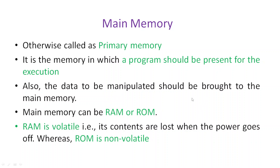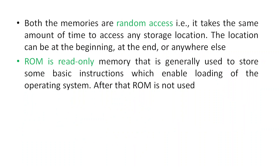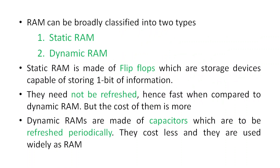RAM is volatile — if the power goes off, the RAM contents are lost. ROM is non-volatile — its contents are not lost when the power goes off. RAM can be further classified into static RAM and dynamic RAM.